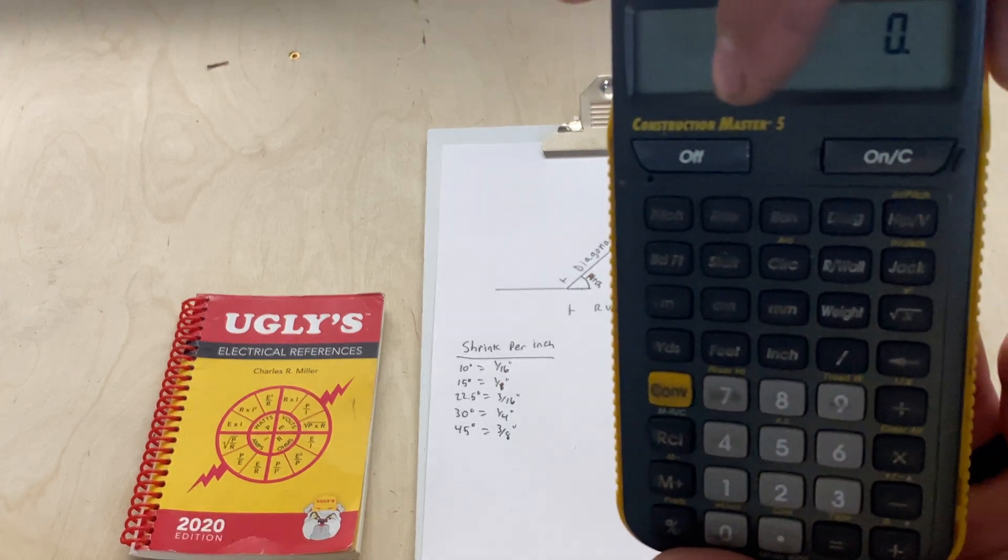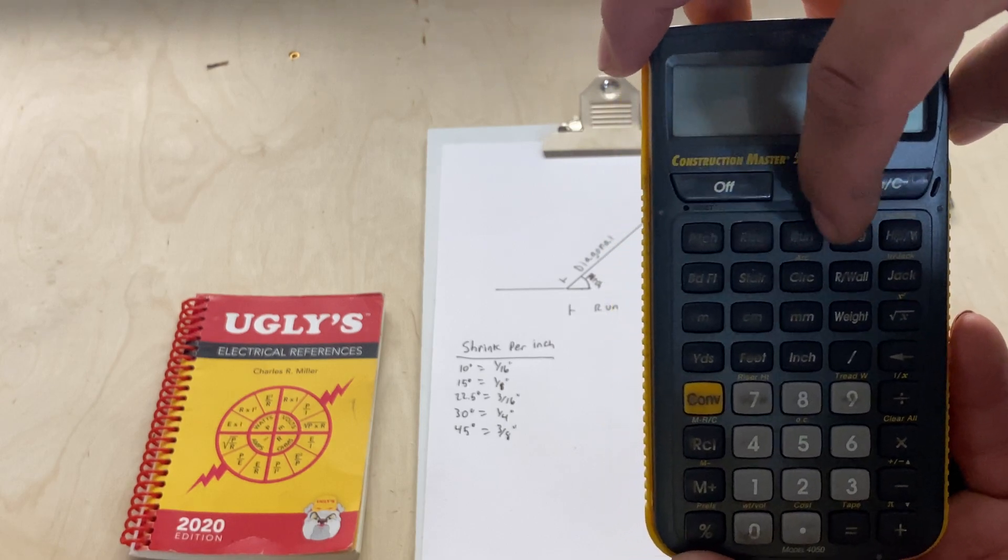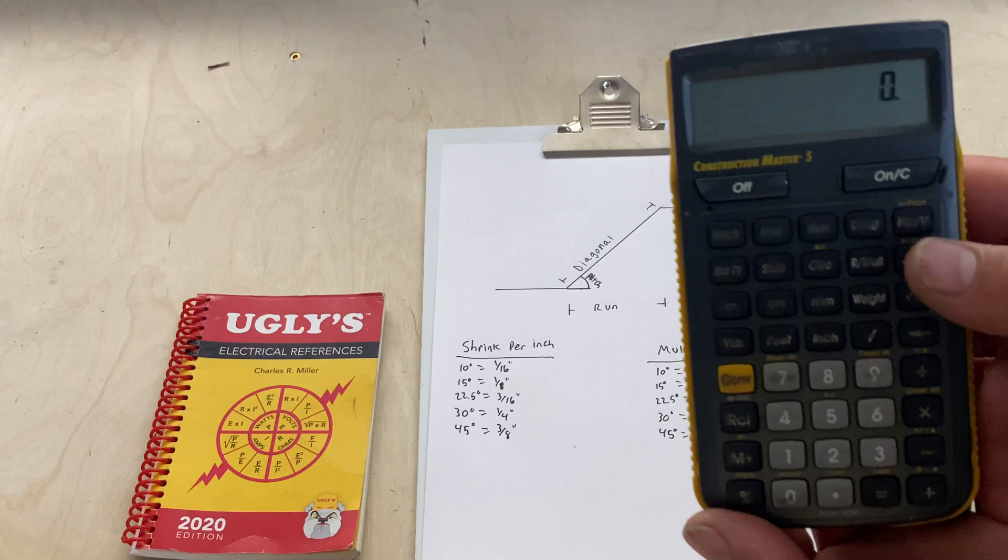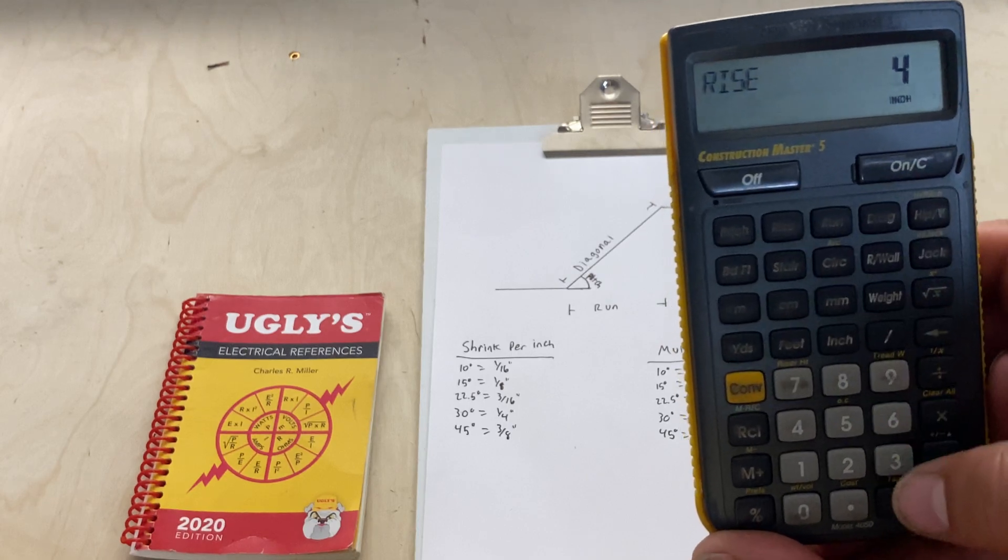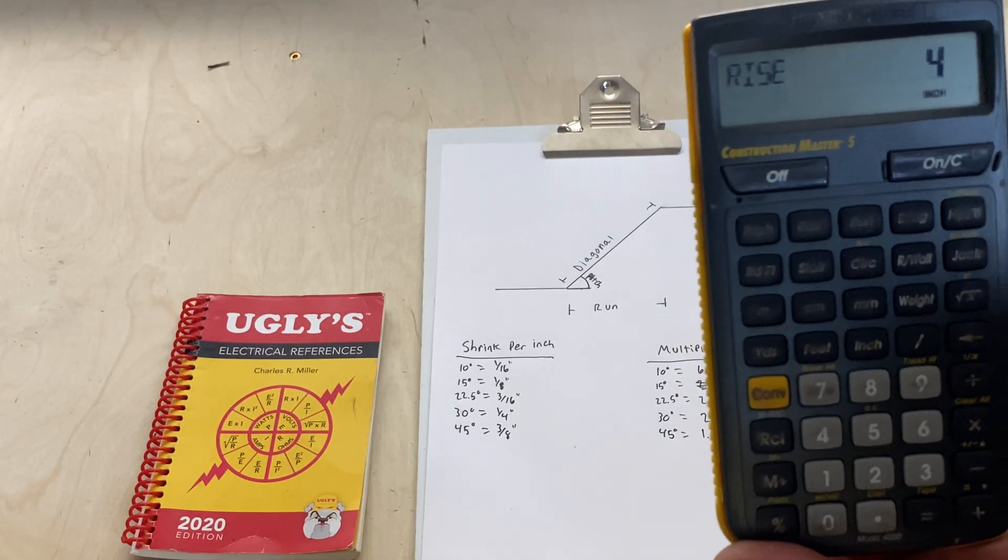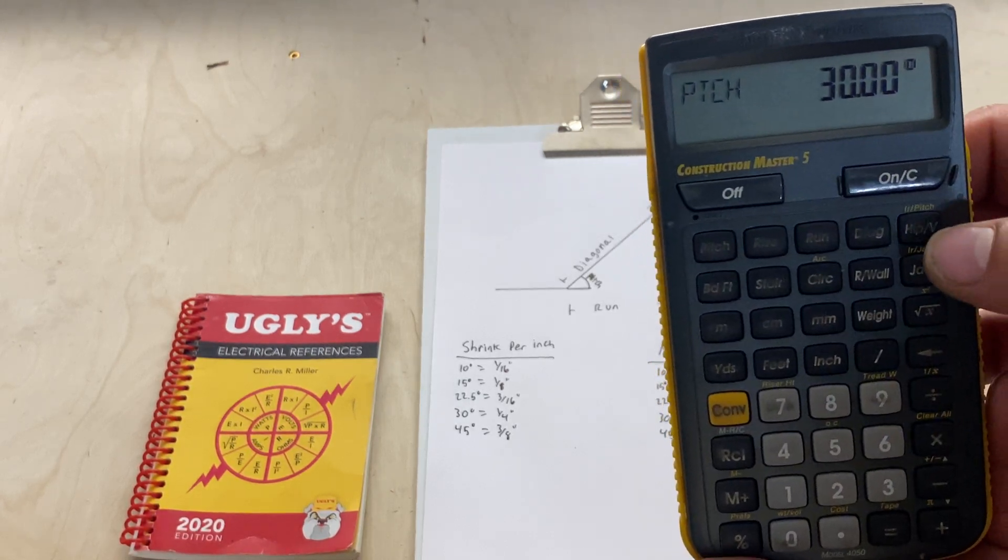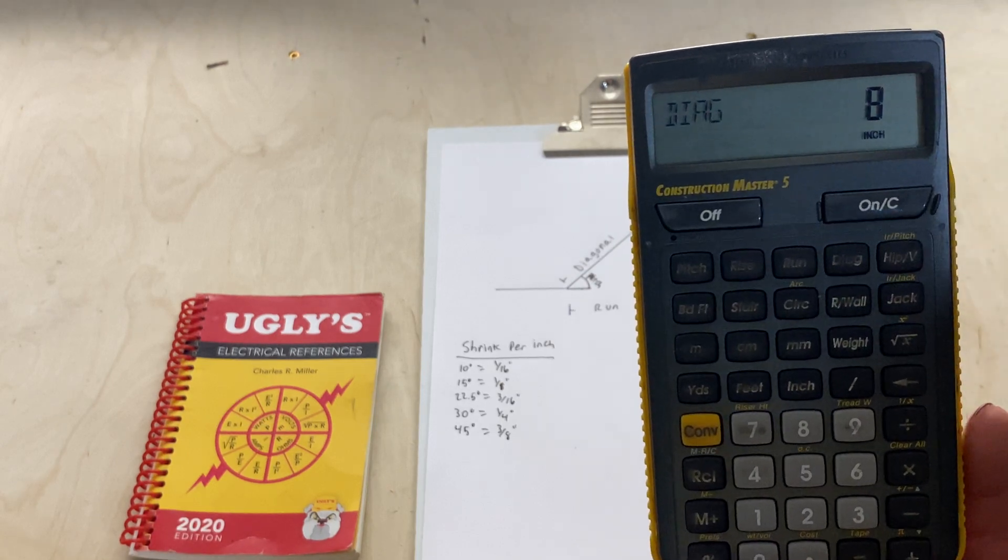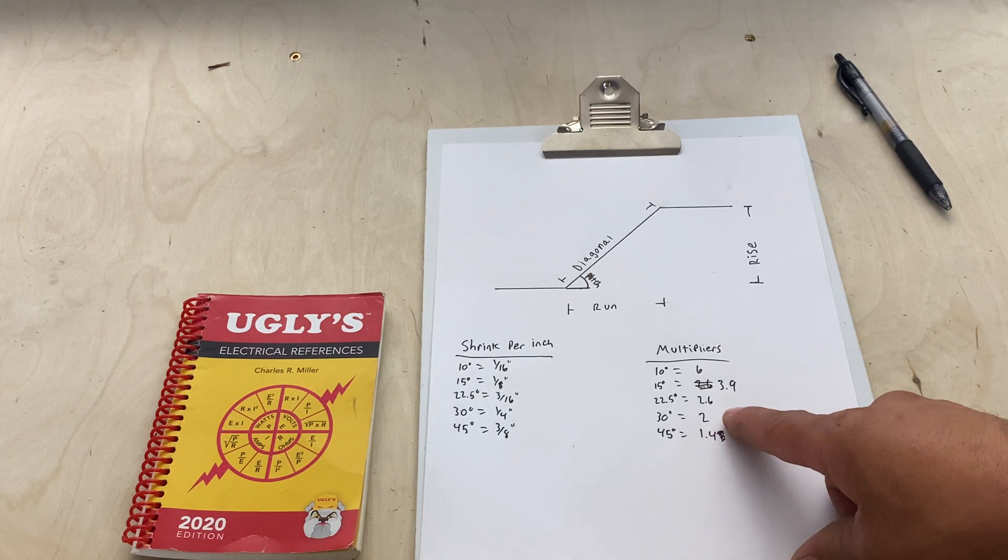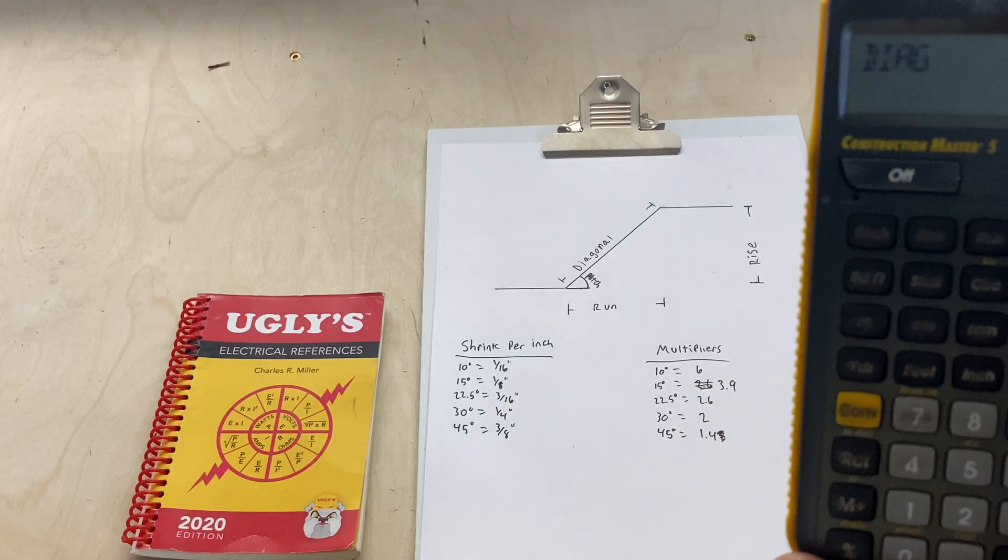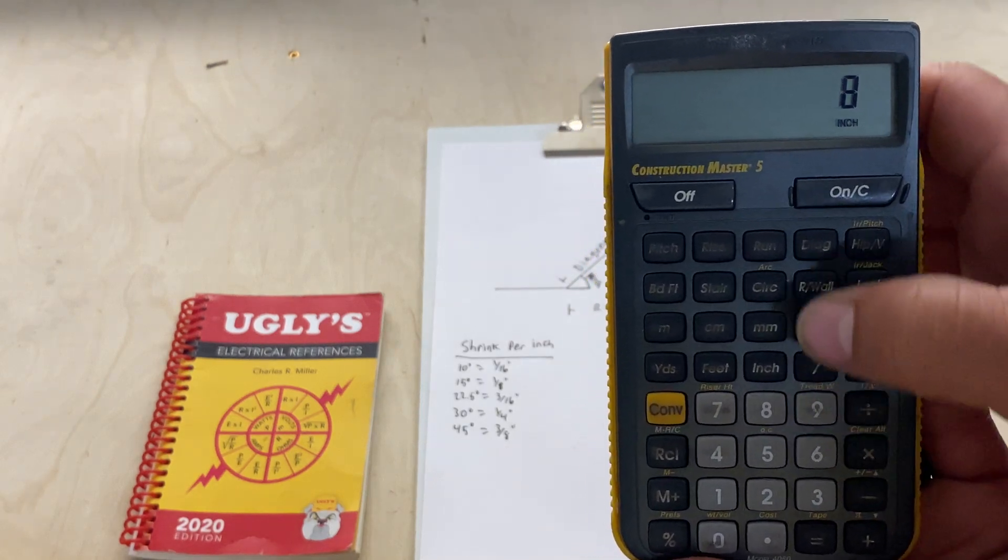On your calculator, I go diagonal, run, rise, pitch because those are the buttons on the top. Mine are all faded from years of use. Let's say we have a four-inch rise and the degree we want to use, let's keep it simple, let's say 30 degrees. So 30 pitch. Then we hit diagonal and that's our measurement.